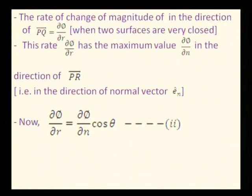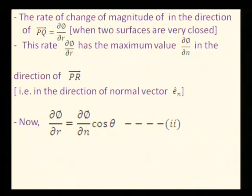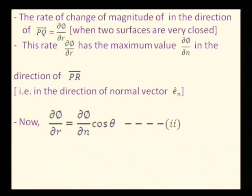If I want the maximum value of del φ by del R, I can take theta equals to 0. If I take theta equal to 0, what I get is cos 0, and cos 0 is 1. So that will be equal to grad φ. See the definition of gradient — if we take theta equal to 0 in equation number 2, then cos 0 is 1, so we have del φ by del R equals to del φ by del n. That gives the maximum value of del φ by del R.